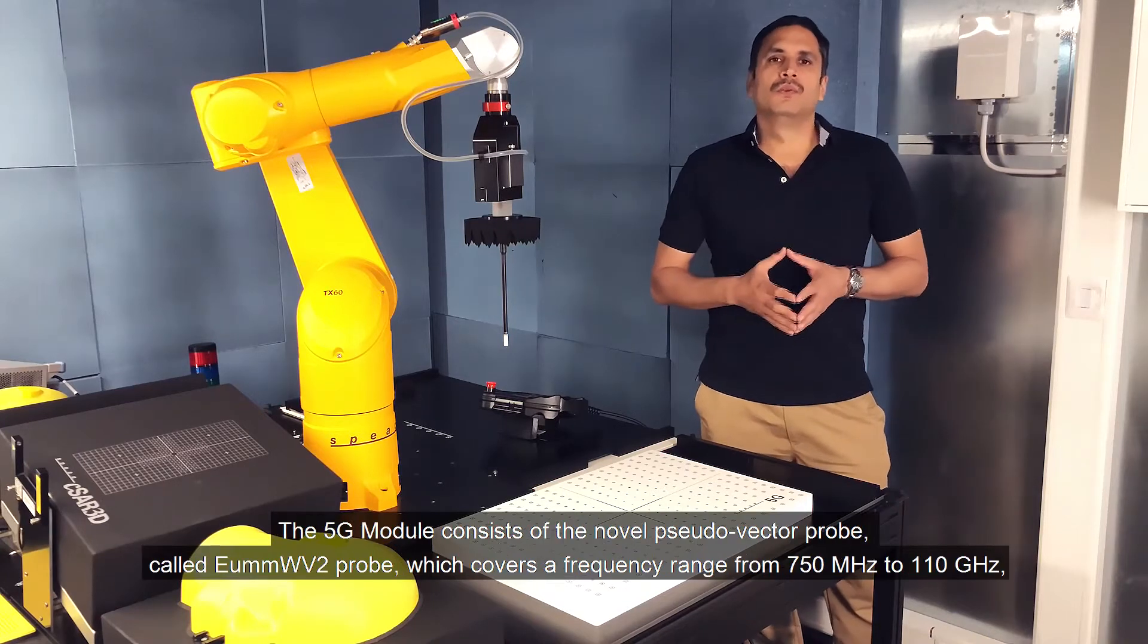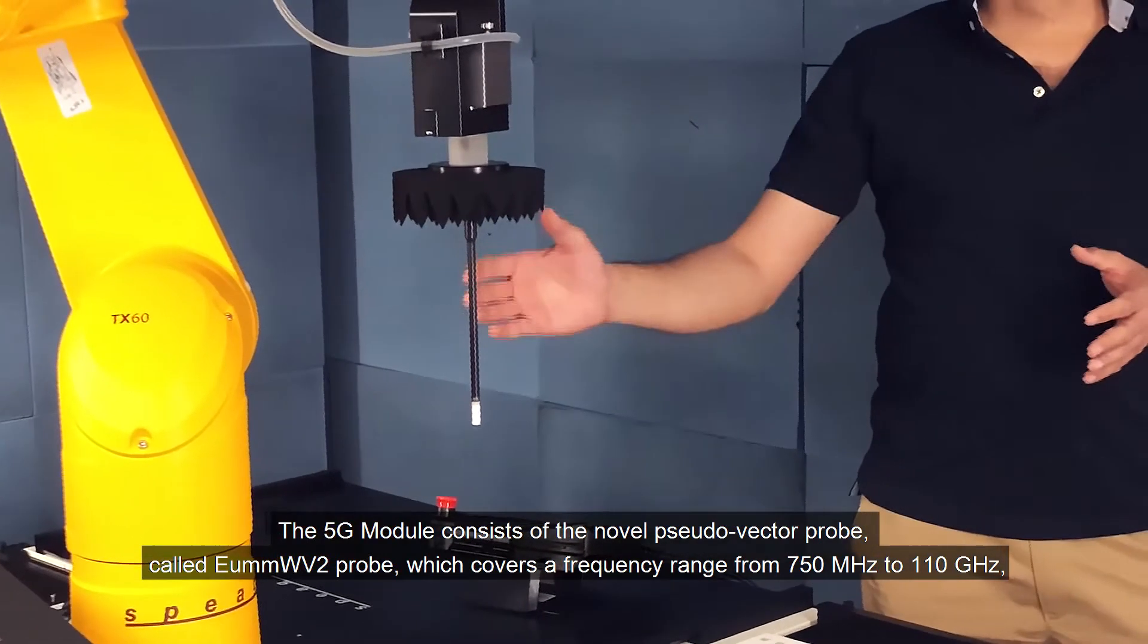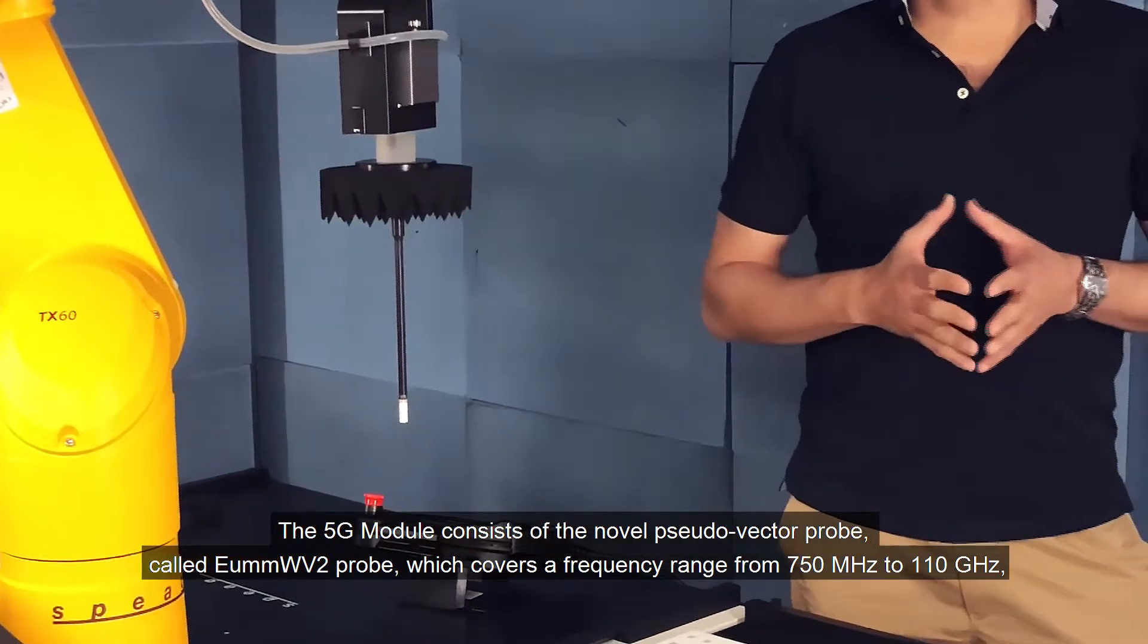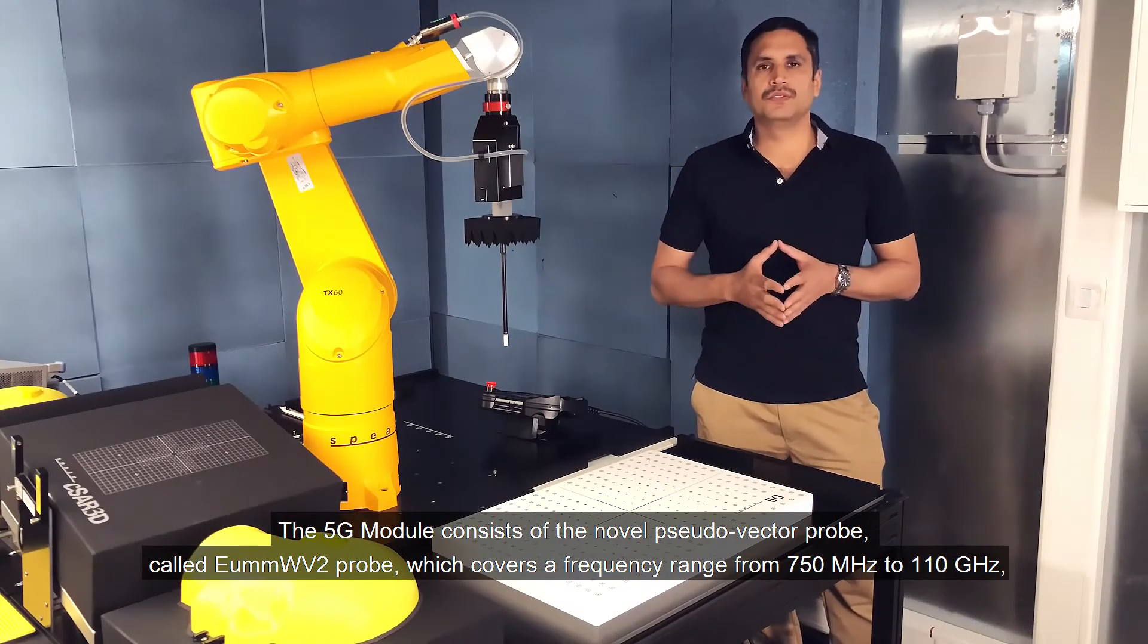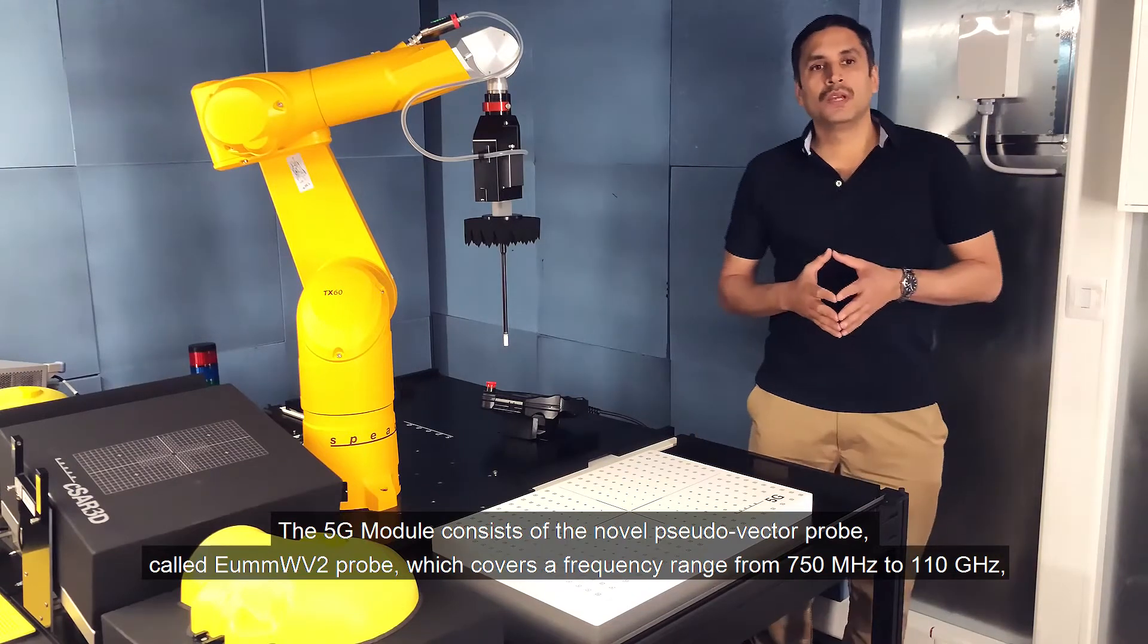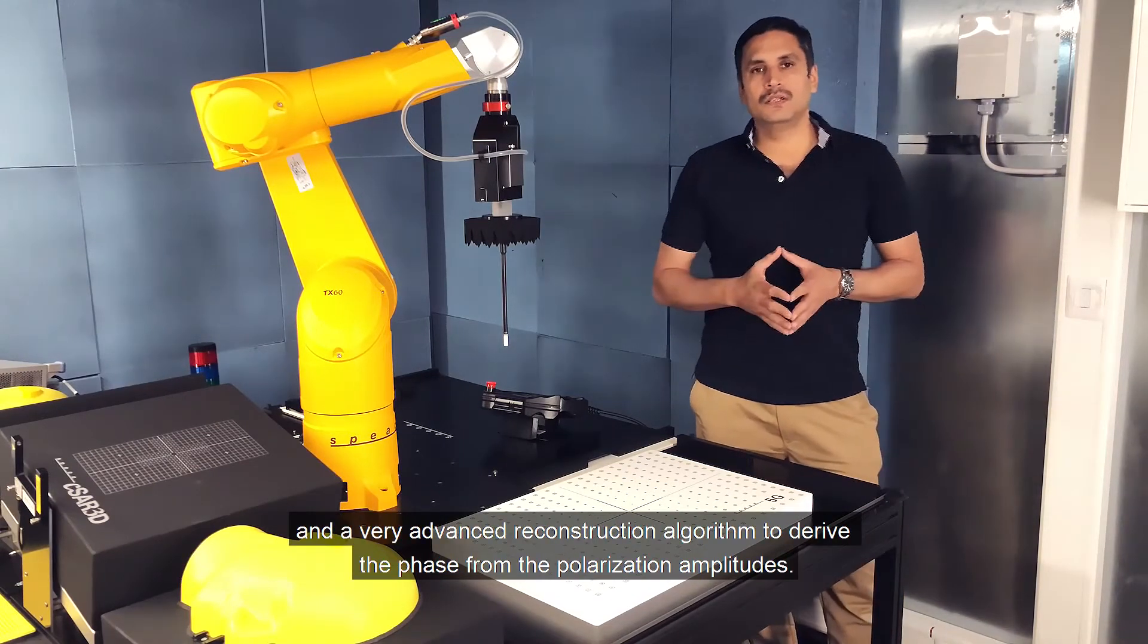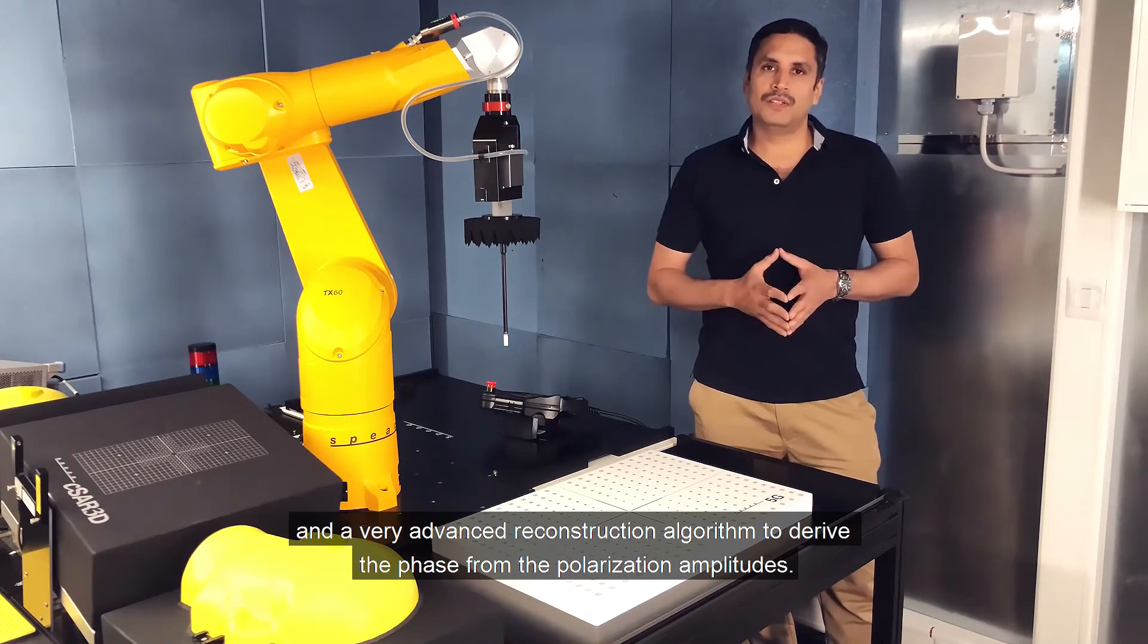The 5G module consists of the novel pseudo-vector probe called the EUMMWV2 probe which covers a frequency range from 750 megahertz to 110 gigahertz and a very advanced reconstruction algorithm to derive the phase from the polarization amplitudes.